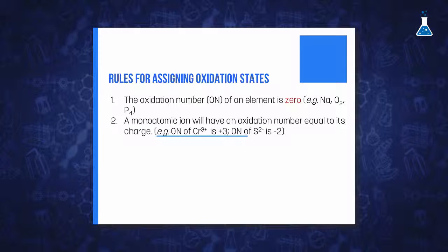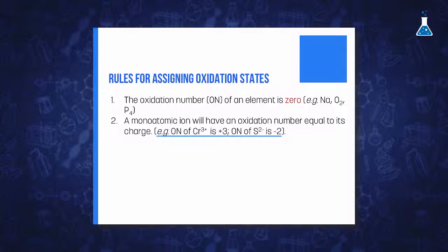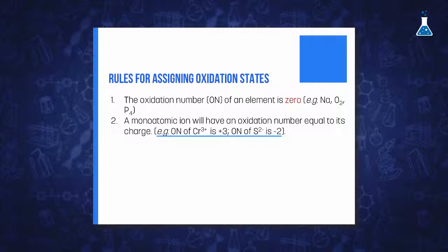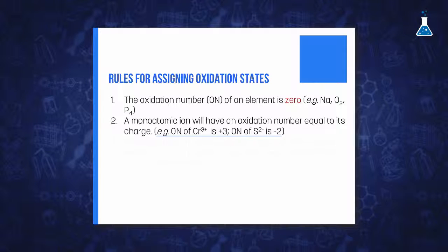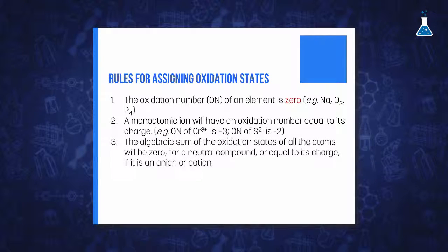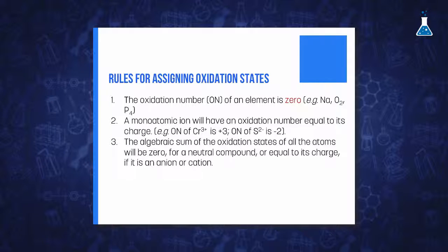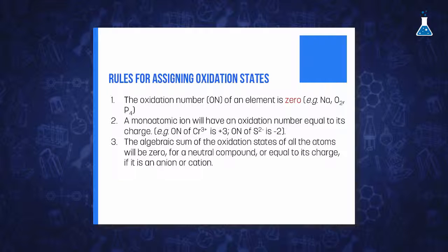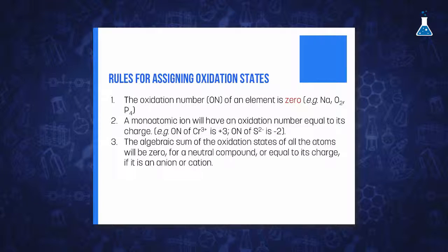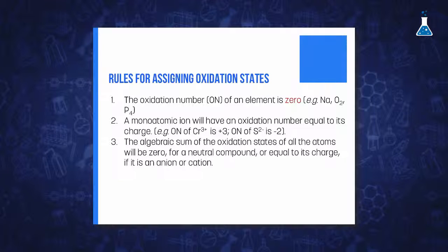For example, chromium 3+ will have an oxidation state of 3+, and the anion sulfide will have an oxidation state of 2−. The algebraic sum of the oxidation states of all atoms in a molecule will be zero for a neutral compound, or equal to its charge if it is an anion or cation.